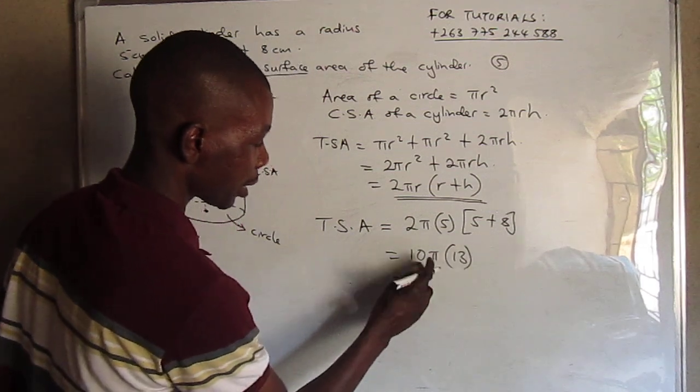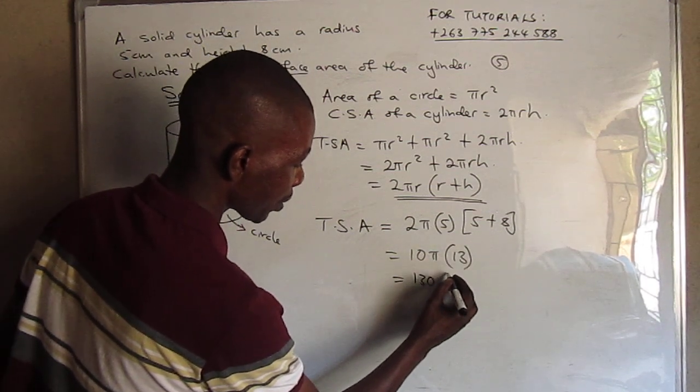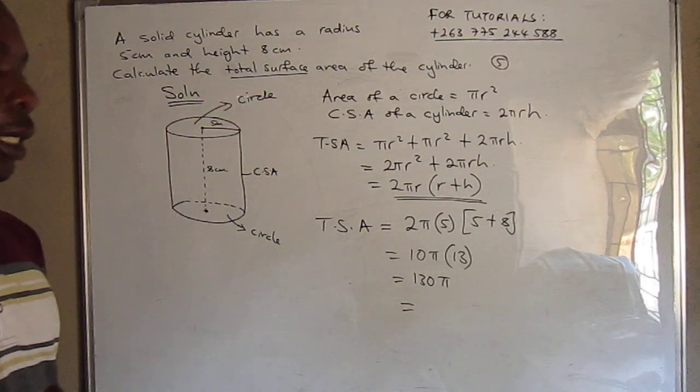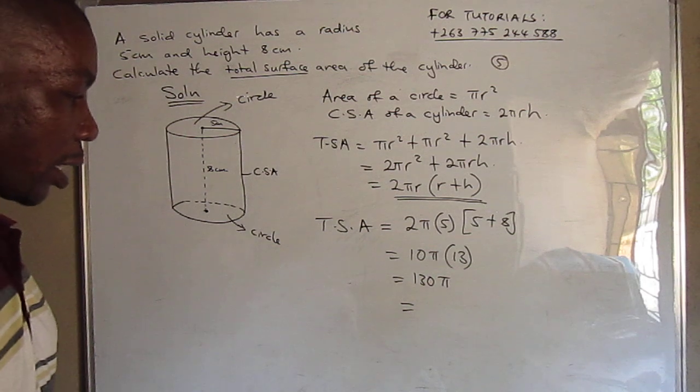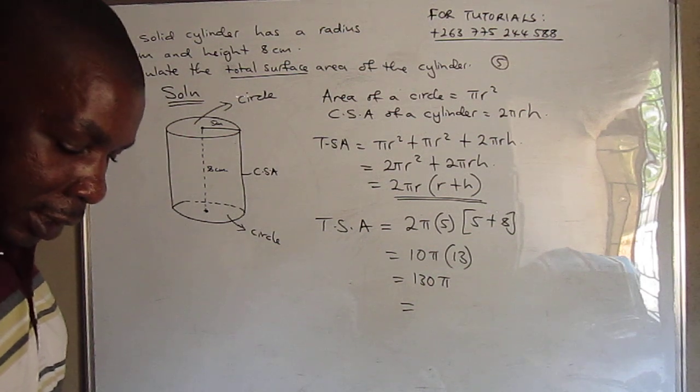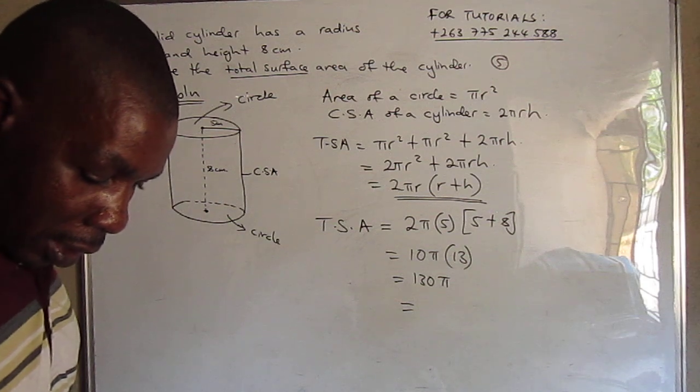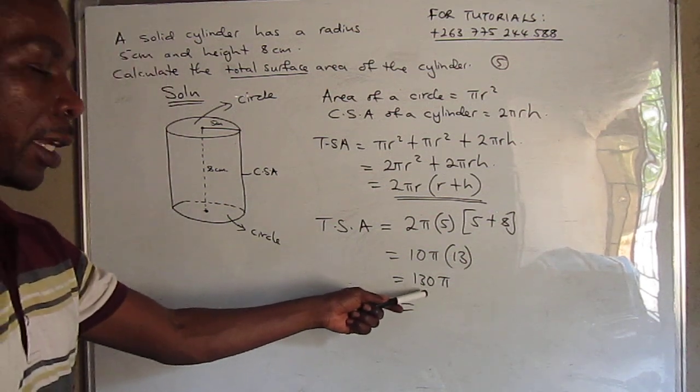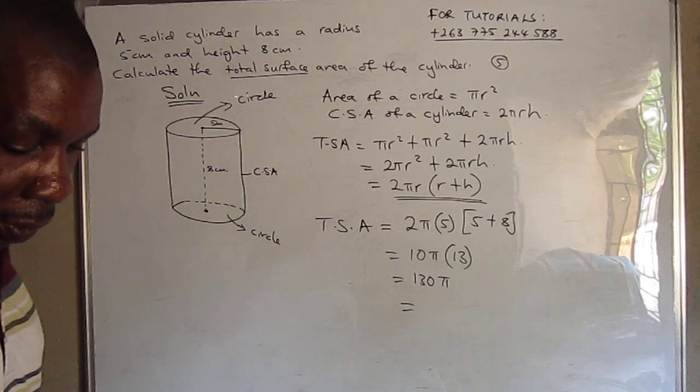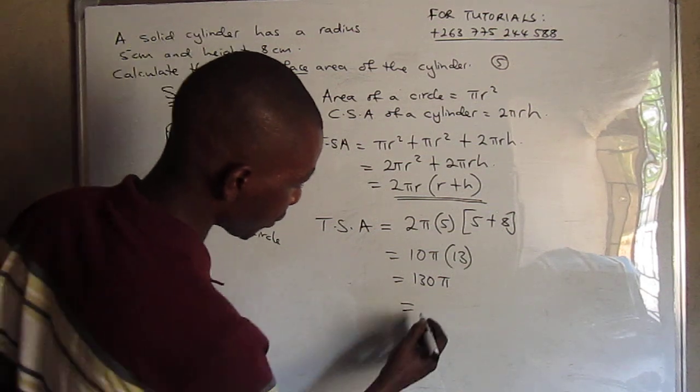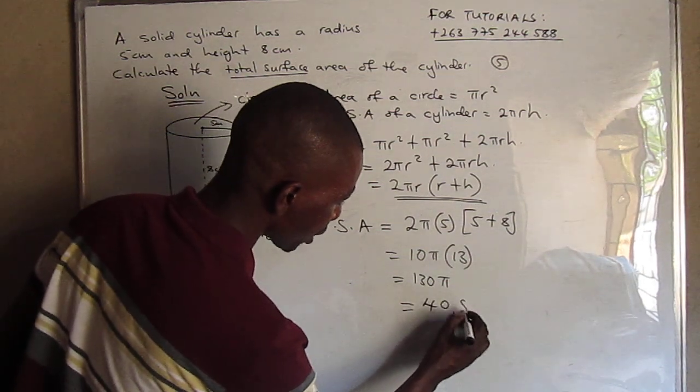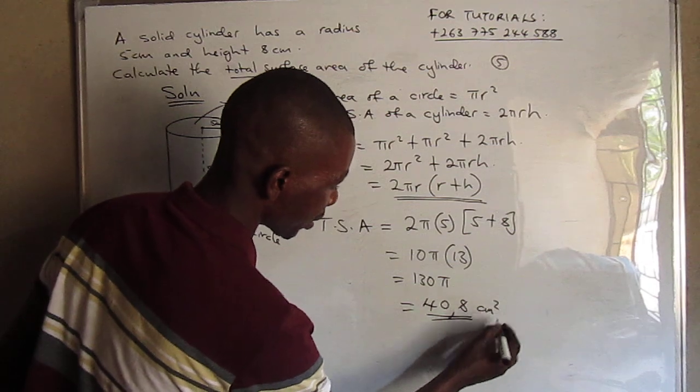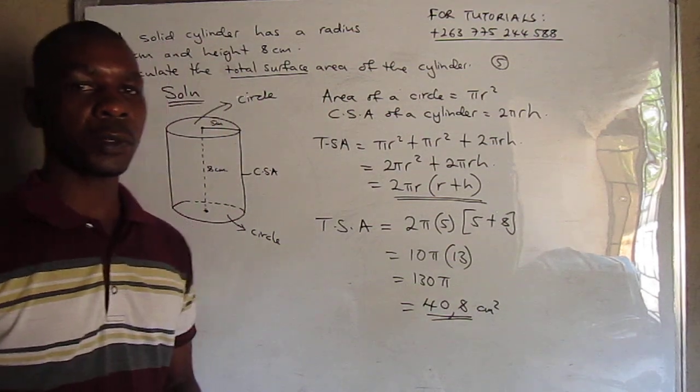Then this is 10 times 13 is 130 times π. So you can put this in your calculator to find the actual value. But if the question asks you to give your answer as an exact value, this is the exact value. So 130π is 408 to 3 significant figures in square centimeters. Remember, it's area. Thank you for watching this video.